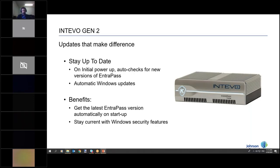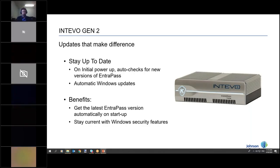Out of the box, you have up to five days to do the update automatically. After five days, you download it yourself manually. The benefit is that you're not left with an older version, and if you forget, we'll remind you to update. We now allow you to do all Windows Updates for the Intevo Gen 2 — the Windows Updater will remind you that updates have to be done, so you always stay current with EnterPass and always get your Windows Updates done.